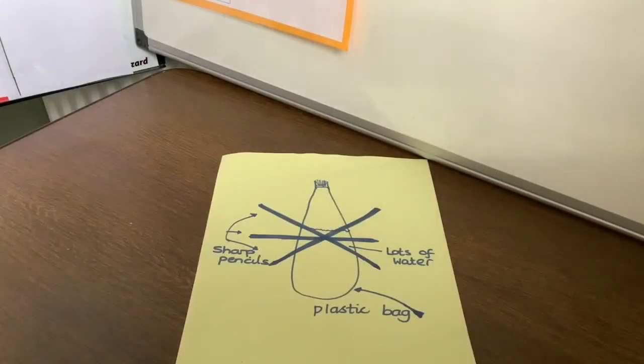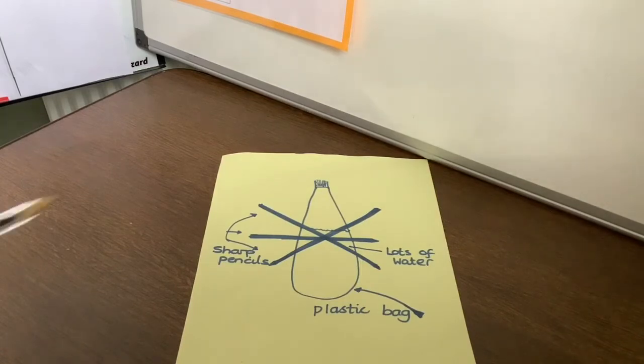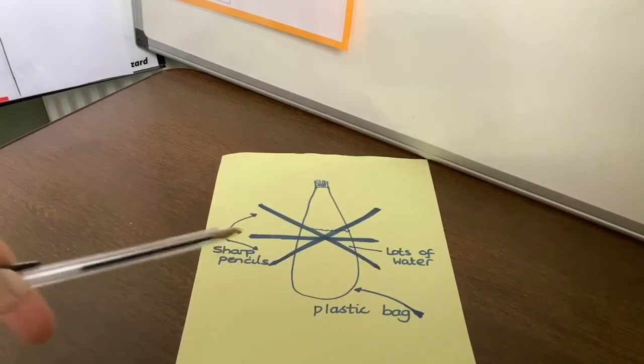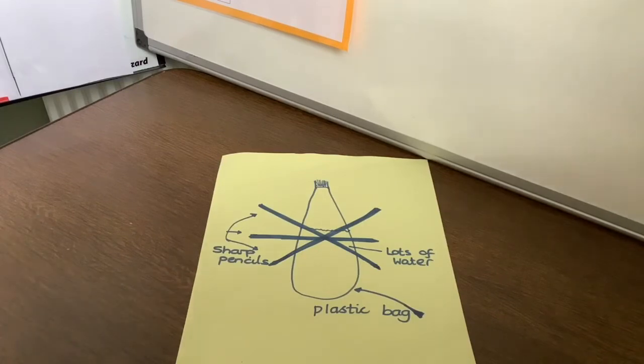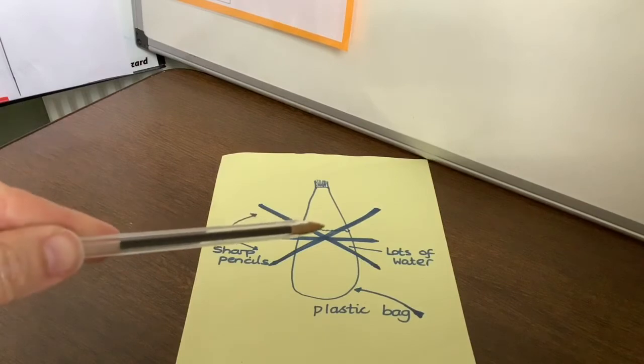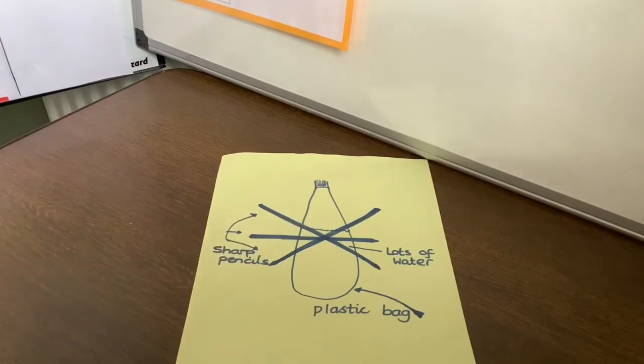So how does it work? Excuse my drawing, but you'll get the idea from it. So the plastic bag is made up of long chains of molecules called polymers and these make the bag stretchy. When the sharp pencil pierces the bag, it squeezes between the chains, but it doesn't break the chains. So a seal forms around the pencil and that way it stays watertight.